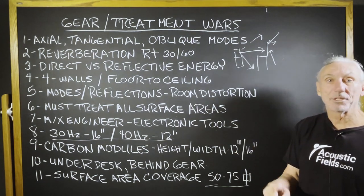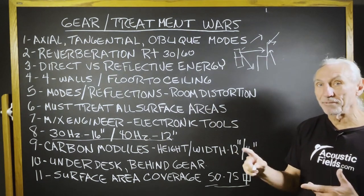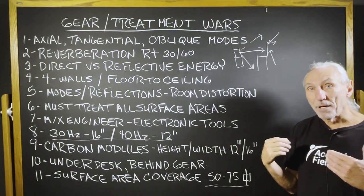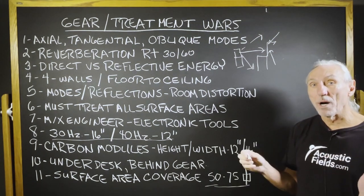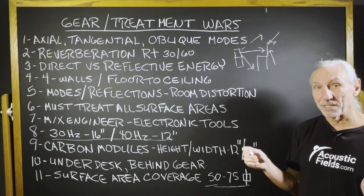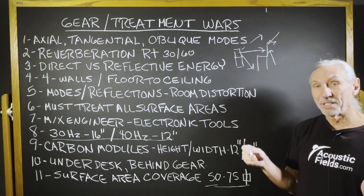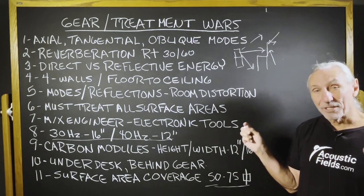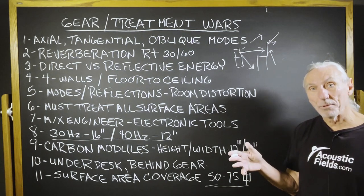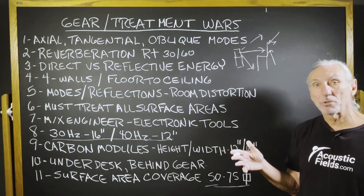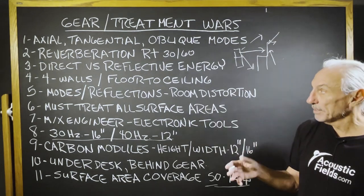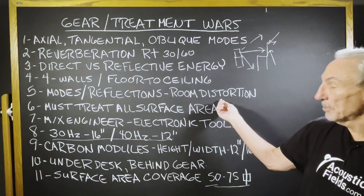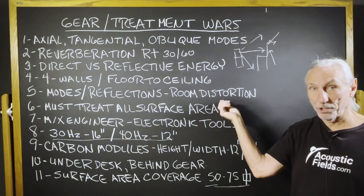We've got four walls and floor-to-ceiling problems. Your eight- or nine-foot dimensions create 60, 70, 80 cycle problems floor to ceiling. If I were a mix engineer, I would not want a modal issue at 60 Hz, because then I've got one at 120, one at 180 — and that's right in the low-mid range, which is so critical to get right in mixes. So we've got modes, reflections, all room distortion.